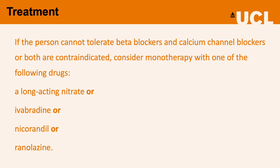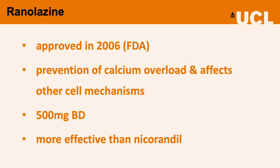If the patient cannot tolerate beta blockers and calcium channel blockers, or both are contraindicated, you should consider monotherapy with one of the following: a long-acting nitrate, ivabradine, nicorandil, or ranolazine. Ranolazine is becoming an increasingly popular drug in the management of chronic coronary syndromes. It had FDA approval in 2006, has complex cellular mechanisms, but basically prevents calcium overload. The starting dose is 500 milligrams twice a day, and it is found to be far more effective than nicorandil in managing patient symptoms.